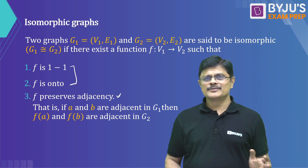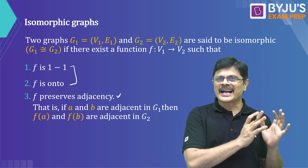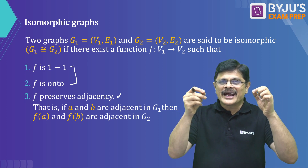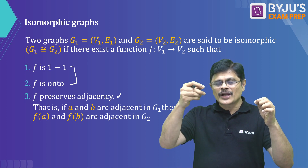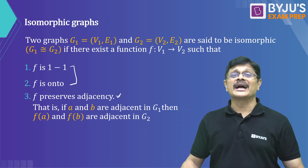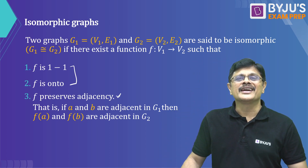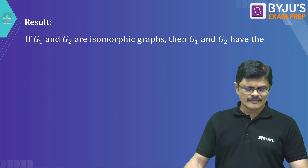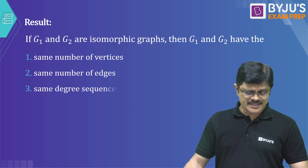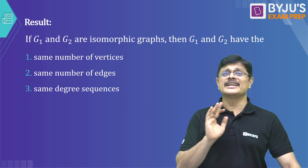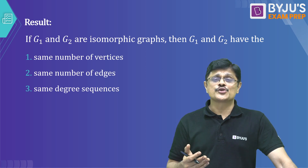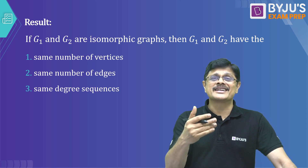These two conditions are just necessary conditions. By these, we get the following information: the two graphs have the same number of vertices, the same number of edges, and the same degree sequence — but that is not sufficient. If A and B are adjacent in G1, then the corresponding image vertices under the mapping should also have adjacency between them. That is what you mean by adjacency-preserving mapping. So isomorphism is a one-to-one and onto mapping which preserves adjacency.